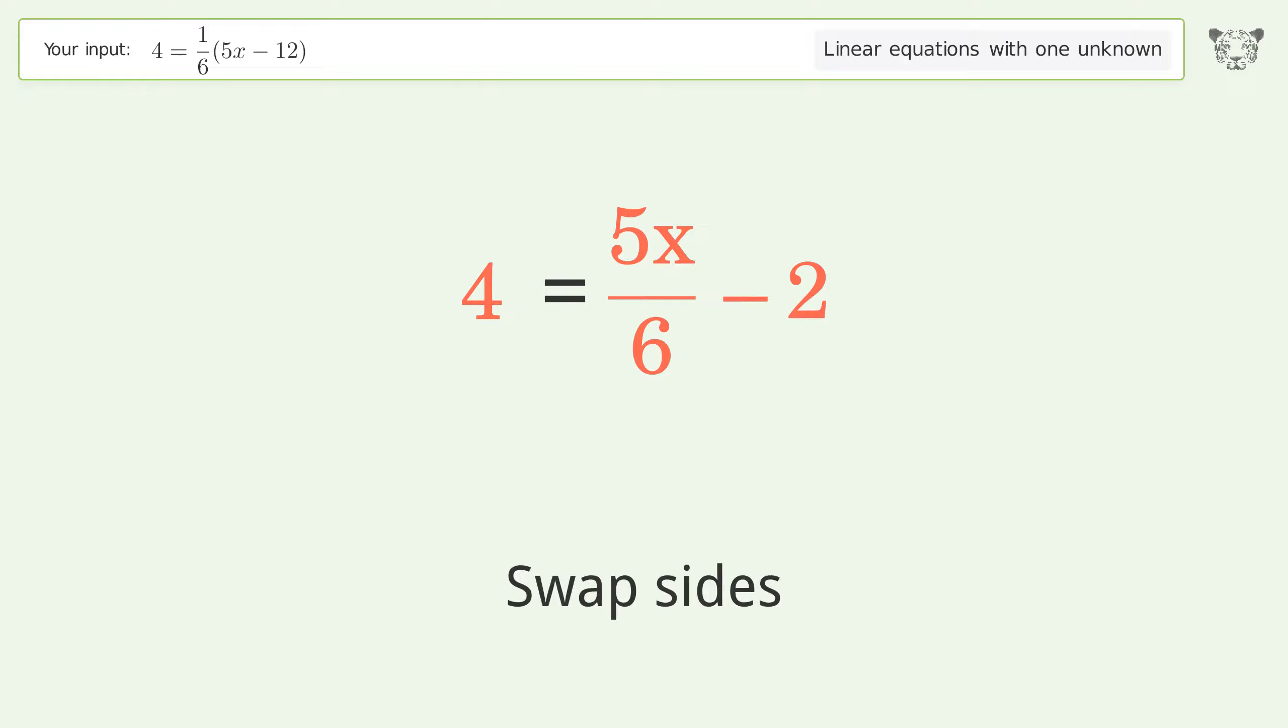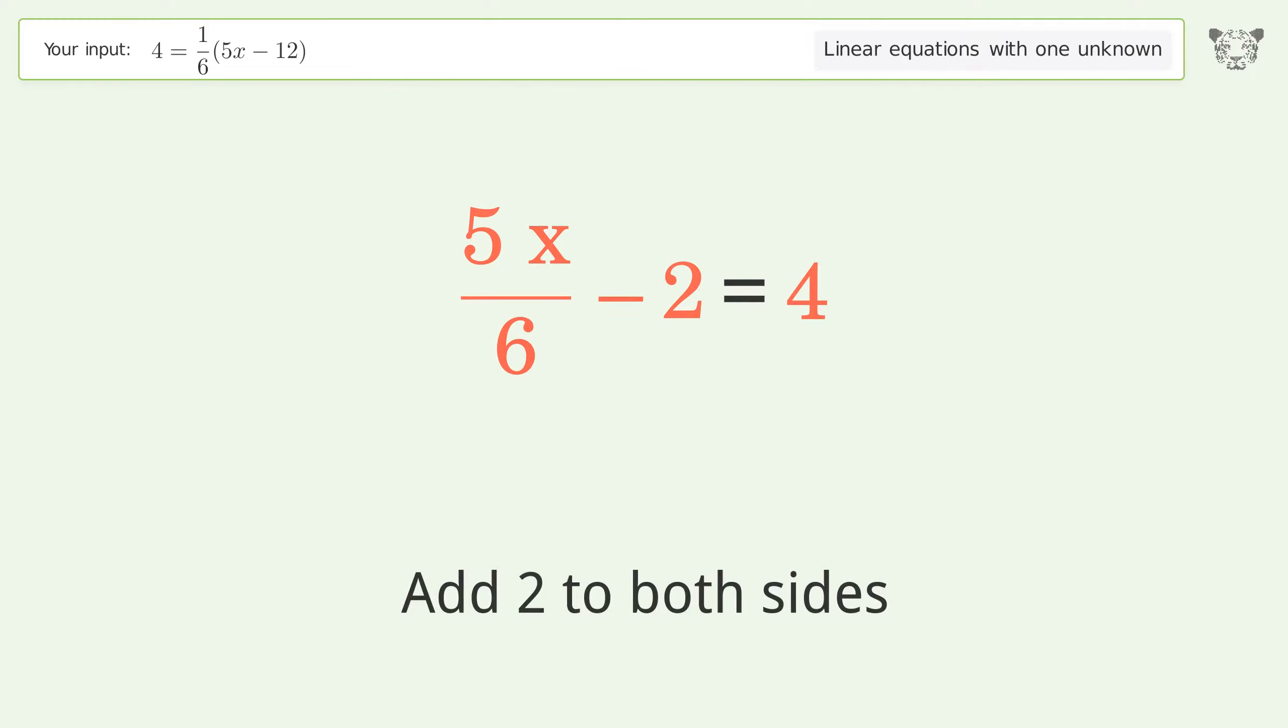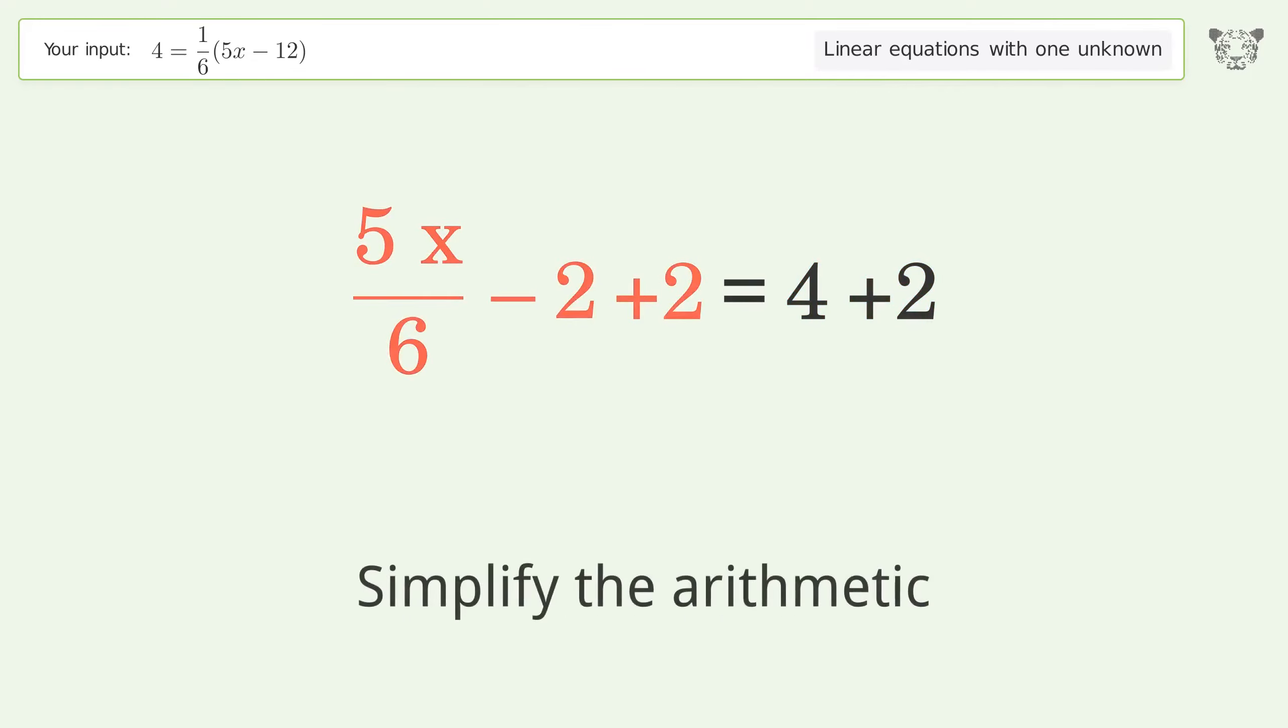Swap sides. Group all constants on the right side of the equation. Add 2 to both sides. Simplify the arithmetic.